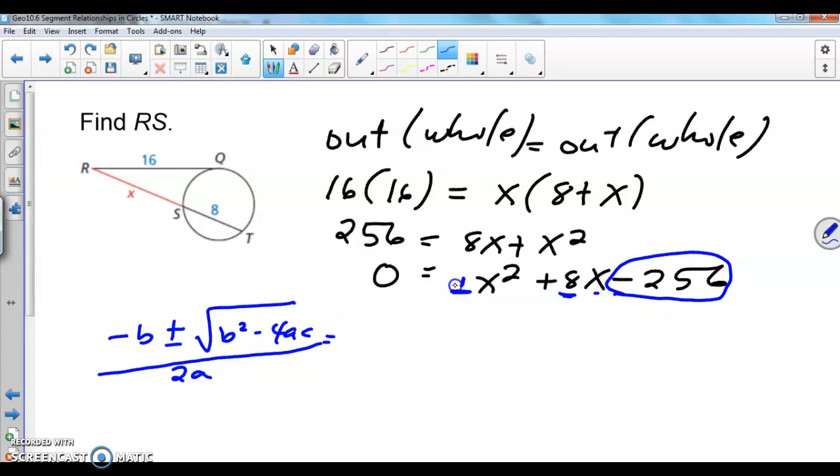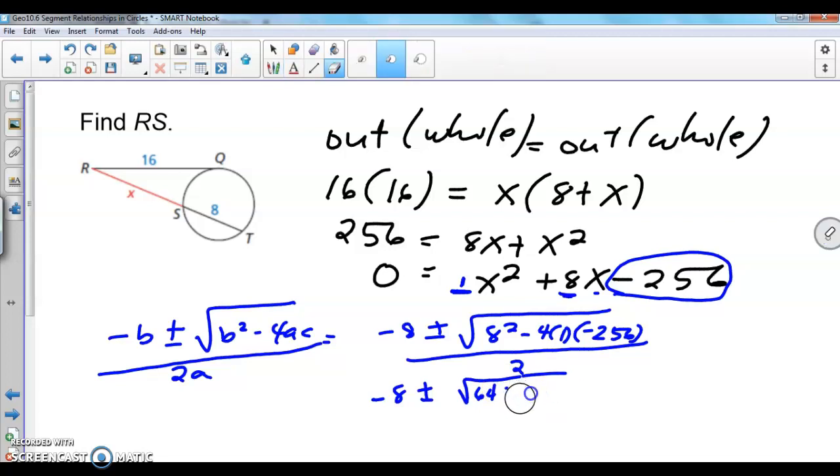So, negative b means the opposite of 8. So, this will become negative 8 plus or minus radical of 8 squared minus 4 times 1 times the c, which is negative 256. All over 2 times 1. So, that will become 2. So, now, let's make some calculations. So, we will get negative 8 plus or minus the root of this will become 64 minus, so that will change into plus 1024 all over 2.